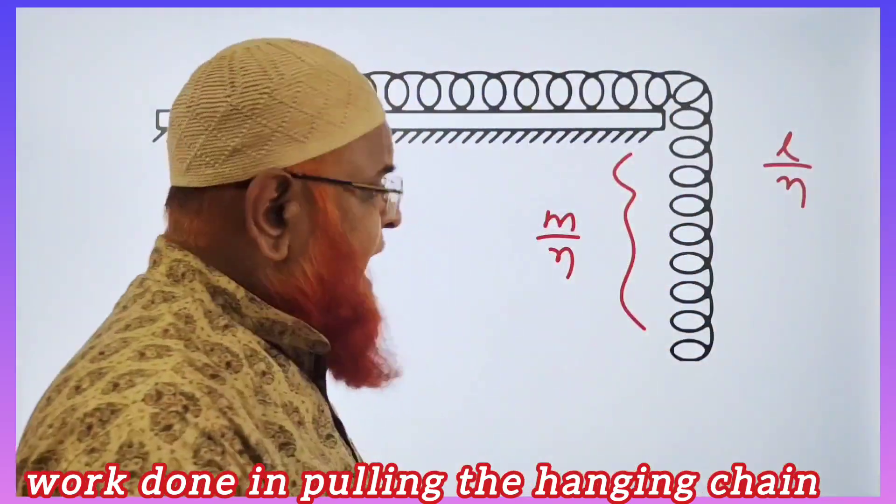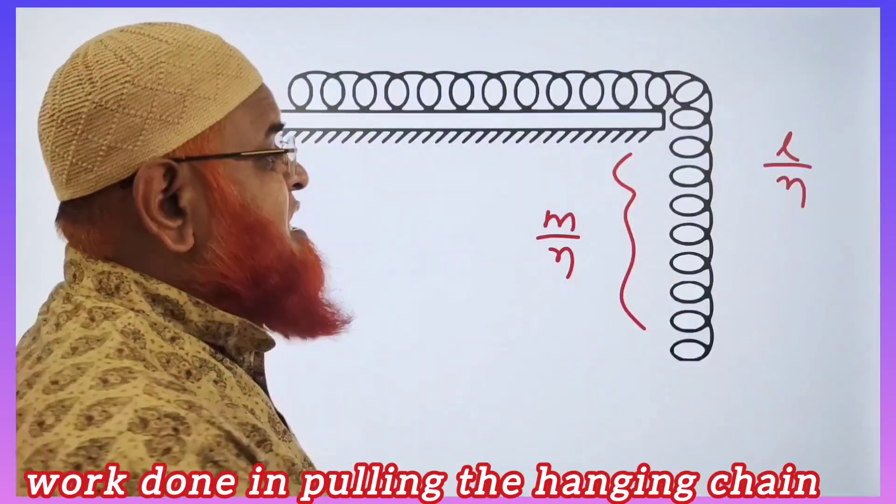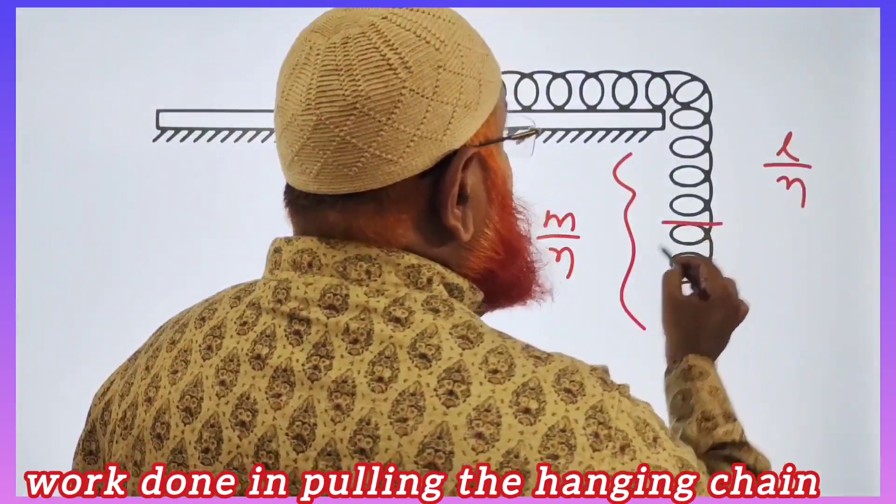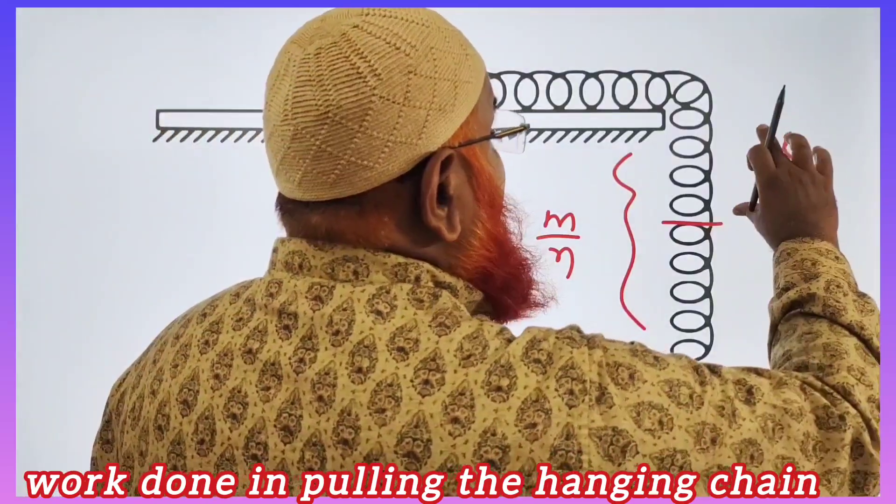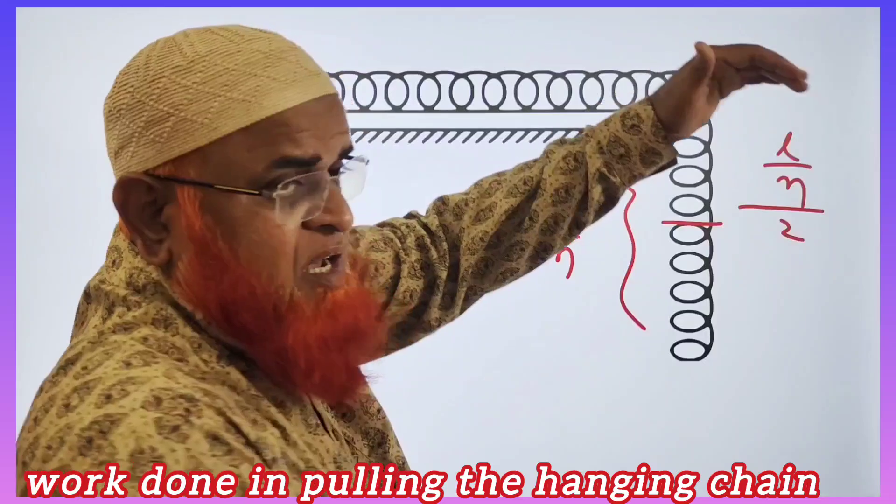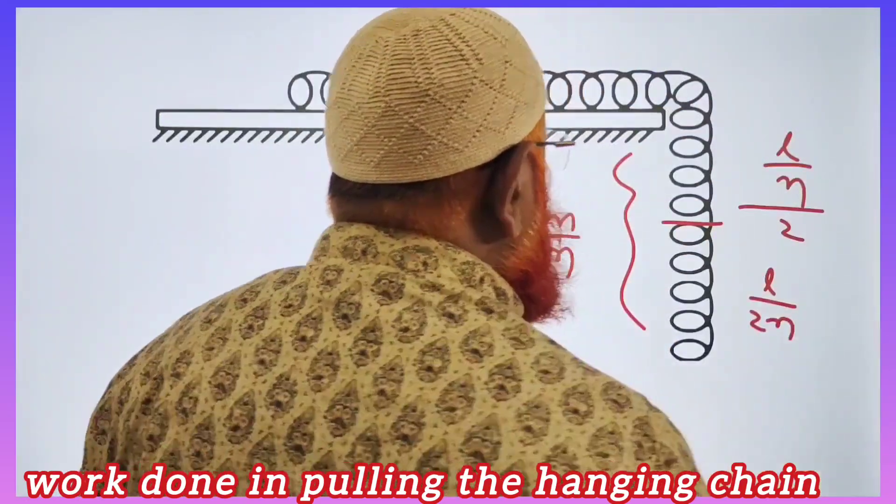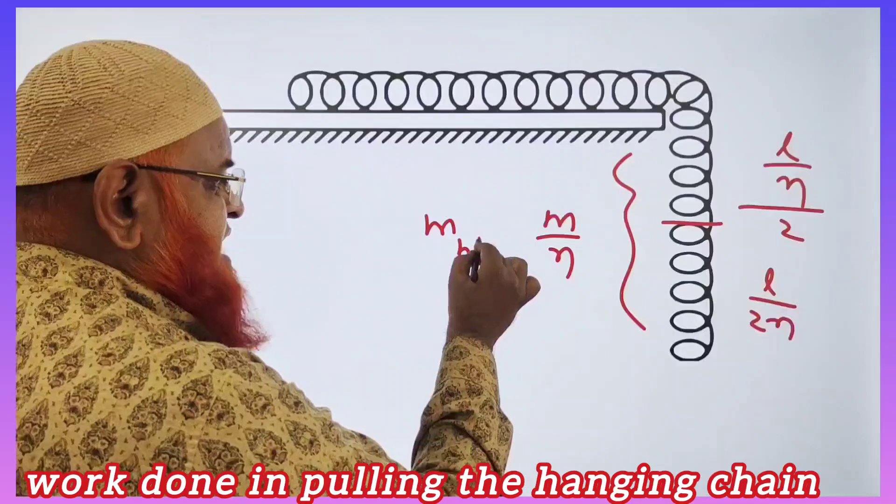This is a uniformly distributed body, so we have to consider the center of mass. The hanging chain should be divided by 2 because you have to take only 50% of the uniformly distributed body. Therefore, you'll be getting L by 2N.